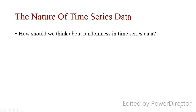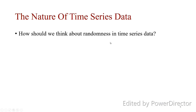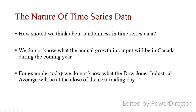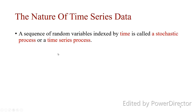How should we think about randomness in time series data? In cross-section, observations differ over individuals but not over time. In time series, we do not know what the annual growth in output will be in Canada, China, or any other country during the coming year — we could have an estimate but it is random. For example, we don't know how the Dow Jones Industrial Average will be at the close of the next trading day. One day is higher frequency; one year is lower frequency.